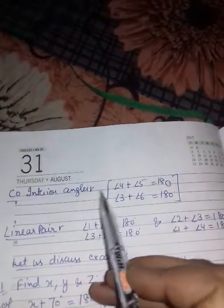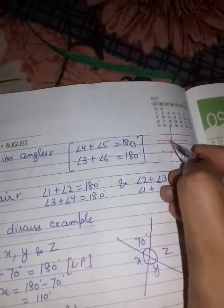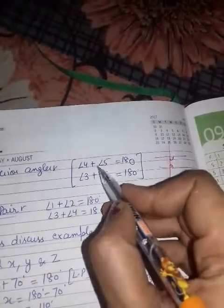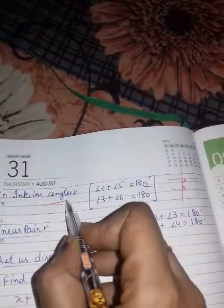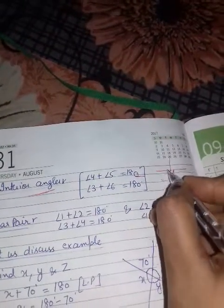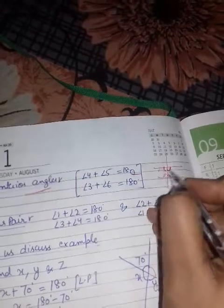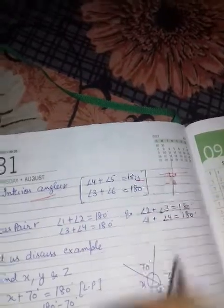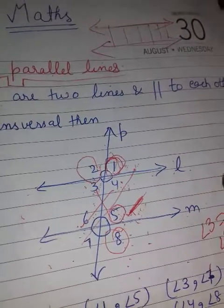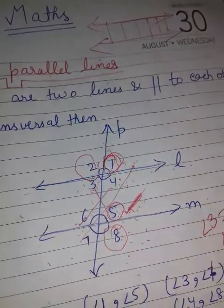Next is co-interior angles. Co-interior angles are those which are on the same side and between the parallel lines. The sum of these two angles is 180°. This is also known as consecutive interior angles — they are the same thing. For example, angle 4 plus angle 5 equals 180°, and angle 3 plus angle 6 equals 180°. These are co-interior angles — between the parallel lines on the same side.